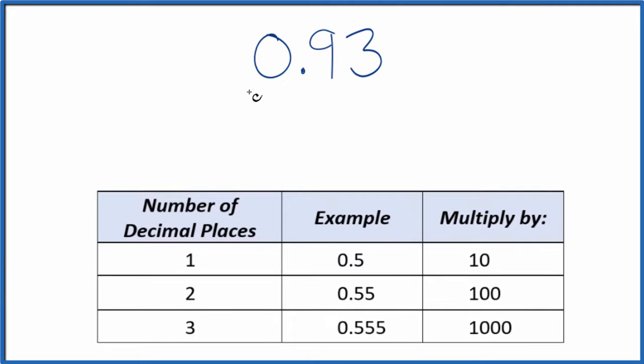In this video we'll convert the decimal 0.93 to a fraction. So let's start off, let's call it 0.93 over 1. It's still 0.93, we're just dividing by 1. Now we have the start of a fraction. It'd be nice if we could get the 0.93 to be a whole number. And we have two decimal places.